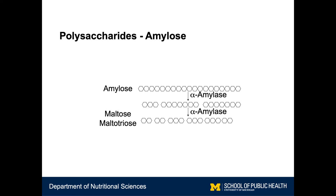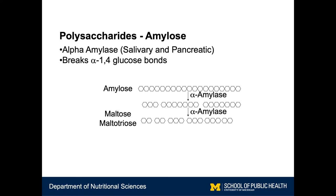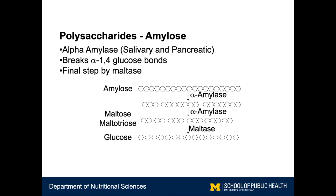In the case of polysaccharides such as amylose, it's a little more complicated. Remember, amylose is a series of alpha-1,4 glucose linkages. We have a set of enzymes called alpha amylases — we have a salivary alpha amylase and a pancreatic alpha amylase. This digestion starts in the mouth but then continues in the small intestine. This enzyme is specific to the alpha-1,4 glucose bonds that comprise amylose. Alpha amylase takes a long chain of amylose and starts breaking it down into smaller and smaller pieces, as shown in the diagram. Eventually, we're left with glucose units combined into dimers or trimers, called maltose or maltotriose. Again, these contain alpha-1,4 glucose linkages.